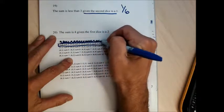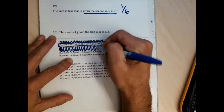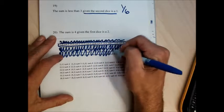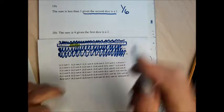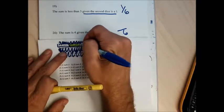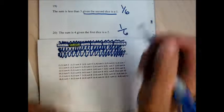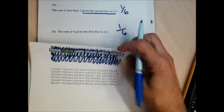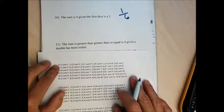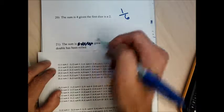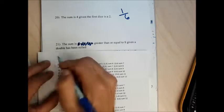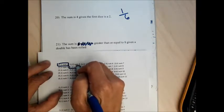For problem 20, I want the probability that the sum is exactly four, given the first die is a two. I reduce the sample space to only those outcomes where the first die is a two — there are six such outcomes, from (2,1) up to (2,6). Of those six, only (2,2) has a sum of four. So the probability is one in six.